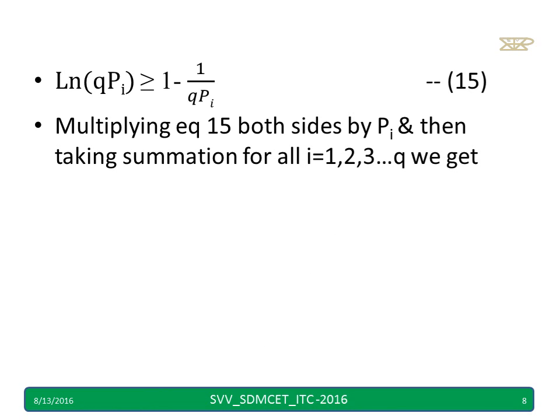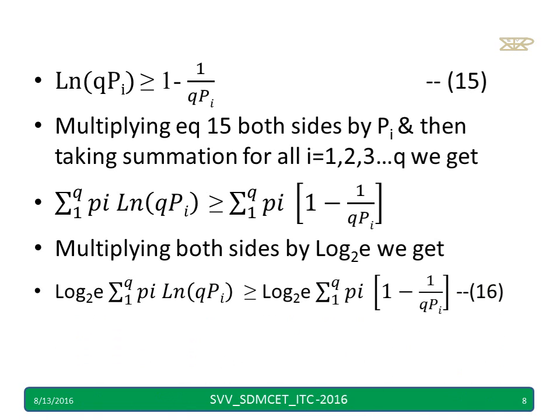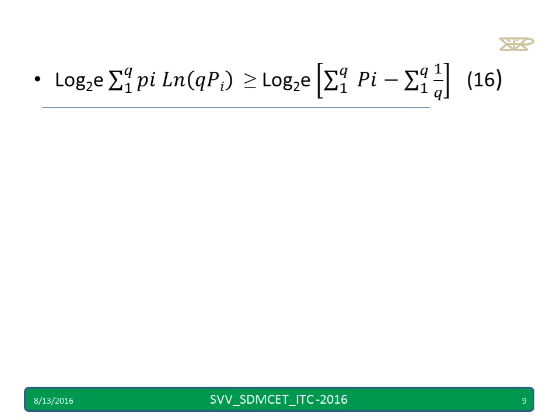ln of qpi greater than or equal to 1 minus 1 by qpi. Let us multiply both sides by pi, then taking a summation i equal to 1 to q. Simply I am multiplying pi both sides. Summation I am taking. You can try to compare this equation with the previous equation number 15. Only I have done multiplication of pi and I have taken a summation. Now multiply both sides by log e to the base 2. I got this equation number 16.